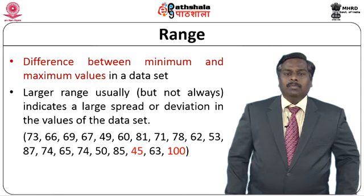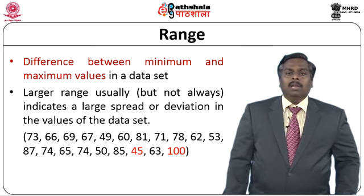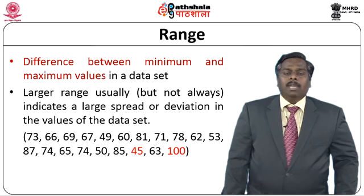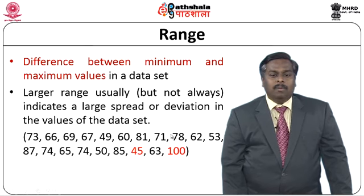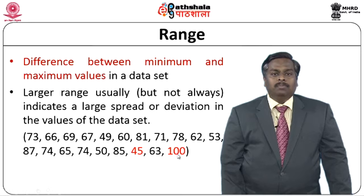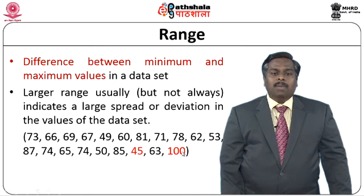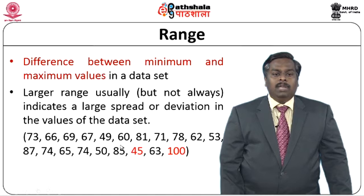To start with, we will first discuss range. Range is fundamentally the difference between the minimum and maximum values in a data set. For example, given a set of numbers like 73, 66, 69, up to 100, we can find the minimum and maximum values. In this set of values, 45 is the minimum value and 100 is the maximum value. The difference between the minimum and maximum value is called the range, so 100 minus 45, which is 55, is treated as the range of the given data set.